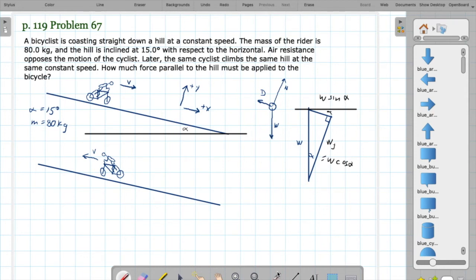In this case, this w sine alpha has to be the same as the drag force to keep the system static, to put the cyclist in mechanical equilibrium.